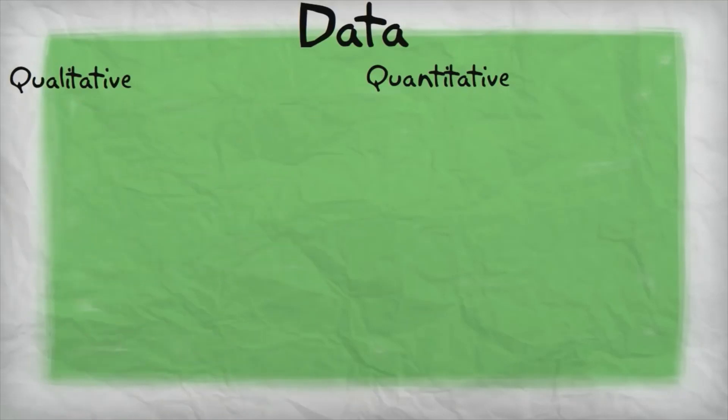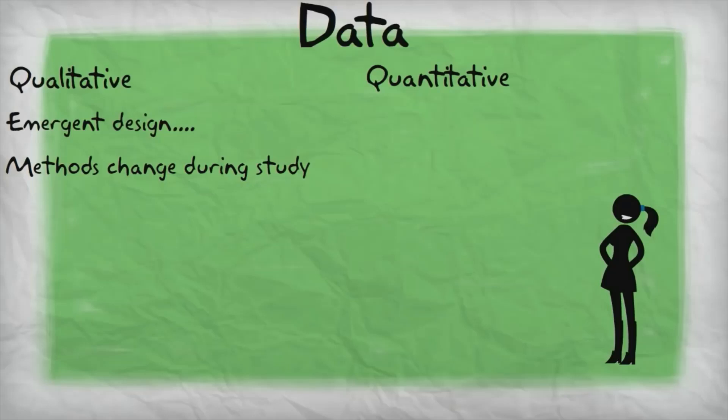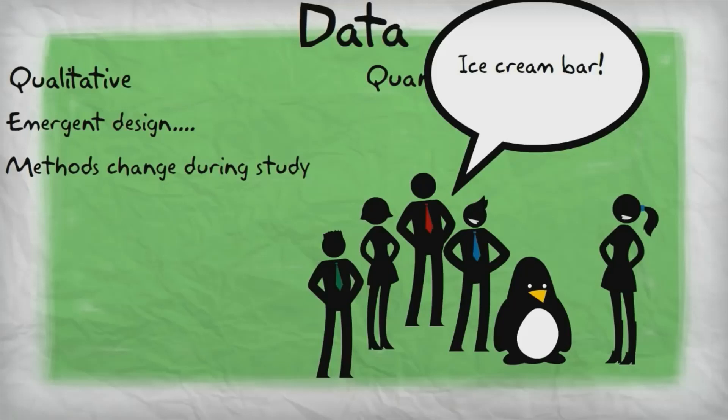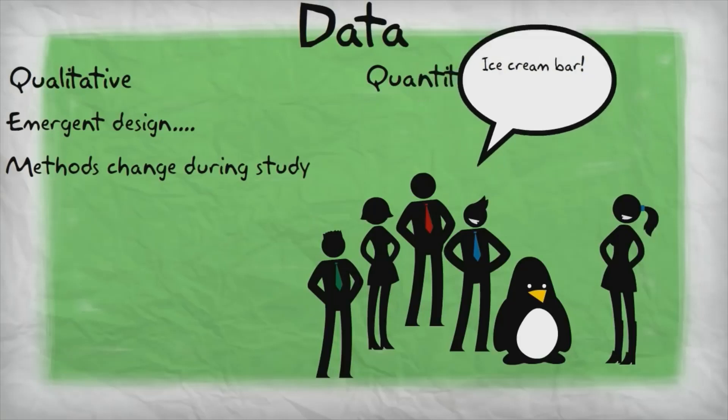It's also important to note that a hallmark of qualitative research is its emergent design. This means that the way in which the study is conducted can change during the study. During qualitative research, it may become apparent that other forms of data from other groups of people should be included into the study. For instance, let's say that a researcher is studying college students' experience trying to eat healthy on campus. Originally, the researcher has planned to just interview a bunch of students. But let's say that during the interviews, the students keep talking about the ice cream area of the cafeteria and student union, how there's over 400 kinds of ice cream and you have to walk around the ice cream to get to the apples. Well, the researcher hears enough students talk about this crazy ice cream bar that the researcher decides that observational data should be included in the study. She needs to see the ice cream bar for herself and see how it overshadows the apple bin. So the research design emerges and different kinds of data might be collected as the study goes on.